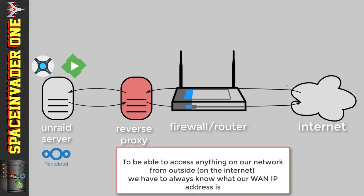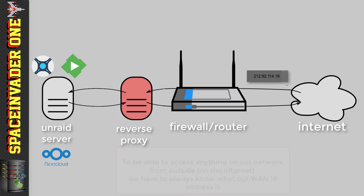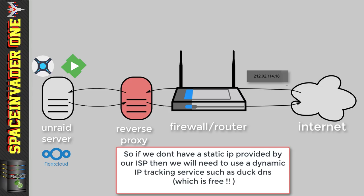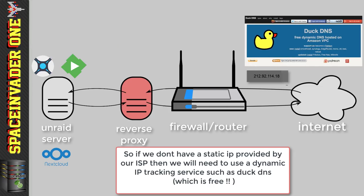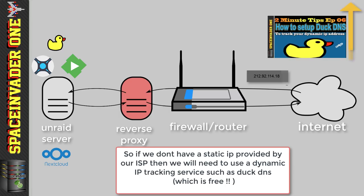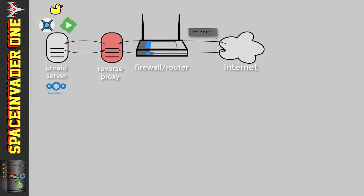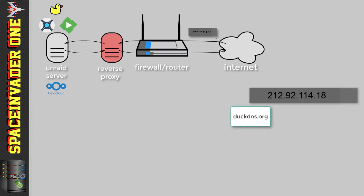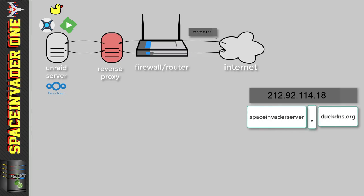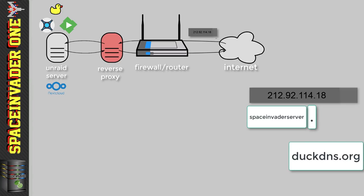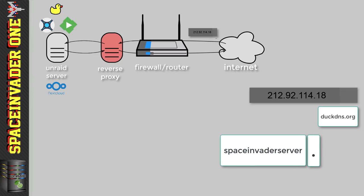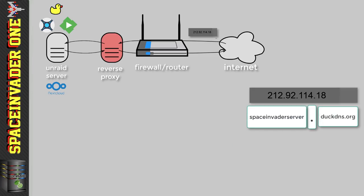To be able to access our Unraid server over the internet through the reverse proxy, we'll need to track our ISP-assigned WAN IP address, because most of us probably won't have a static IP. So we'll need to use a DNS tracker service such as DuckDNS. Let's imagine I've set up the DuckDNS tracker to be SpaceInvaderServer.DuckDNS.org — the DuckDNS.org part is the domain name, and SpaceInvaderServer is the subdomain created when I set it up in DuckDNS.